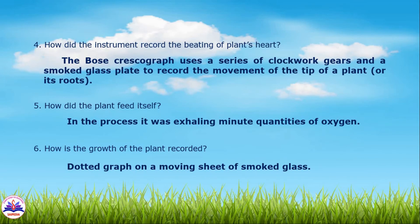Fourth question: how did the instrument record the beating of the plant's heart? The Bose Crescograph uses a series of clockwork gears and a smoked glass plate to record the movement of the tip of the plant or its roots. Fifth question: how did the plant feed itself? It was exhaling minute quantities of oxygen. Sixth question: how is the growth of the plant recorded? Answer: dotted graph on a moving sheet of smoked glass.